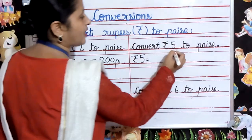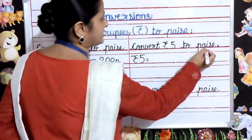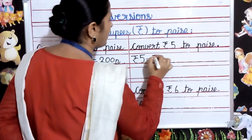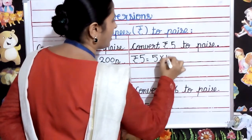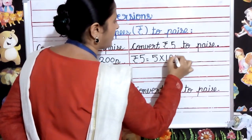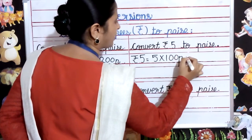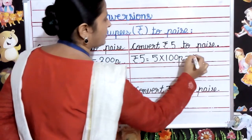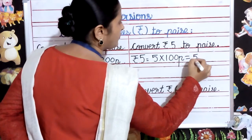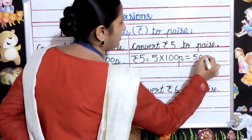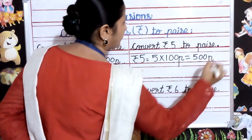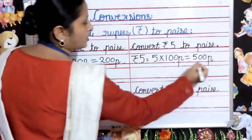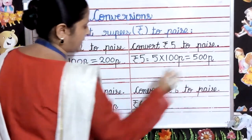Next, convert rupees 5 to paise. For converting rupees 5 to paise, we multiply 5 with 100 paise. 5 multiplied by 100 equals 500 paise. So rupees 5 is equal to 500 paise.